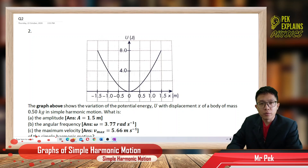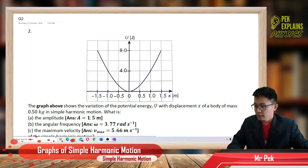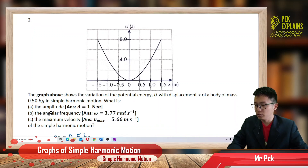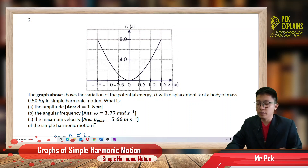The second question is on the graph of simple harmonic motion. The graph shows the variation of potential energy U with displacement x of a body of mass 0.5 kilogram in simple harmonic motion. What is the amplitude, the angular frequency, and maximum velocity of the simple harmonic motion? So this is a potential energy with displacement graph.